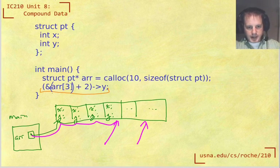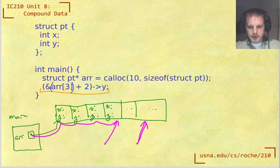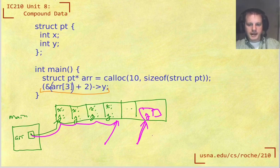So now we have a pointer to this spot. And now what happens with that whole thing is it gets the arrow operator applied to it. So the arrow operator means we follow that pointer, and then we go into the struct. And so there will be a field y in this struct. And that's where we ultimately end up.